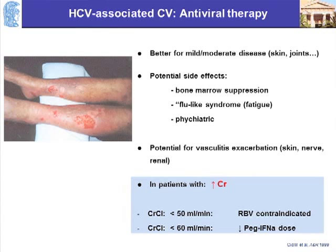A lot of patients develop flu-like syndrome, fatigue, or psychiatric complications. From the past we know that when you give interferon, there is a risk of the vasculitis actually getting worse, not better, especially when they have severe manifestations. Also, you cannot use ribavirin if the creatinine clearance is less than 50 ml per minute. In patients with severe renal disease, the dose of pegylated interferon-alpha has to be adjusted to a lower dose.